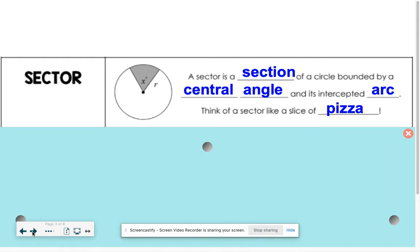This might be new: a sector. A sector is a section of a circle bounded by a central angle and its intercepted arc. So the central angle is this angle right here, and then it's bounded by the arc it makes with the edge of the circle. Think of it like a piece of pizza or pie.